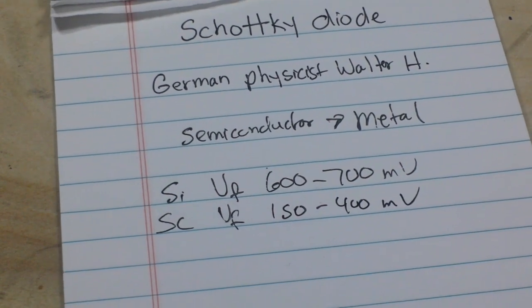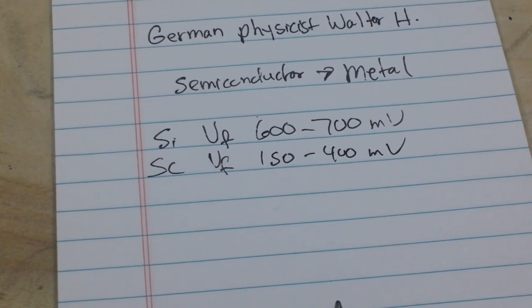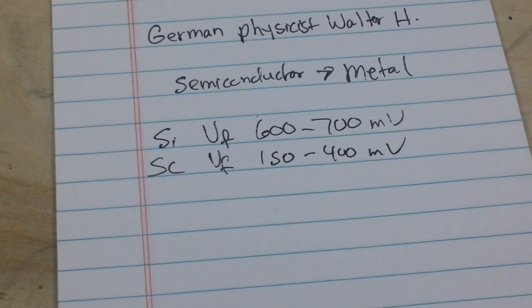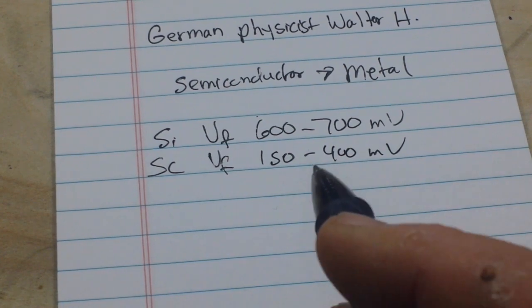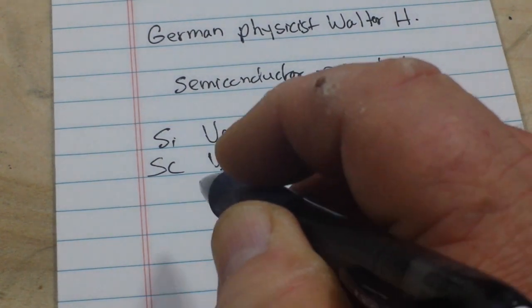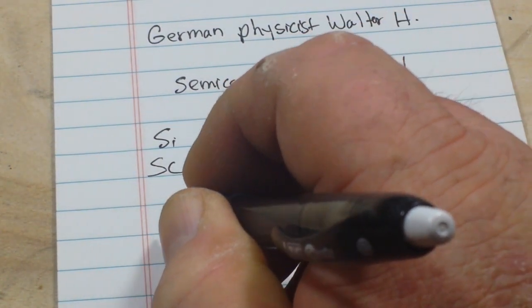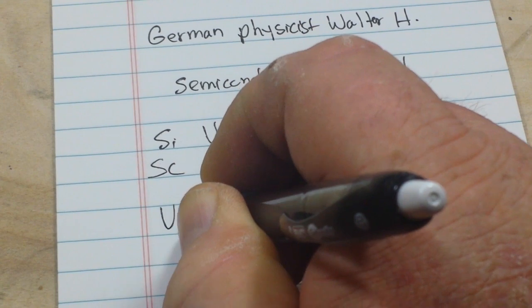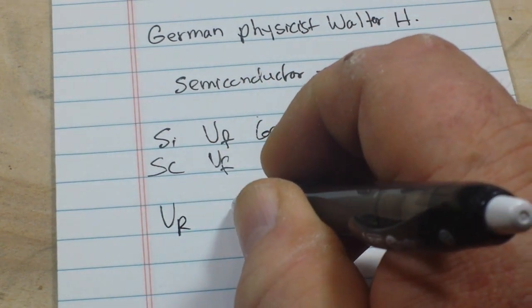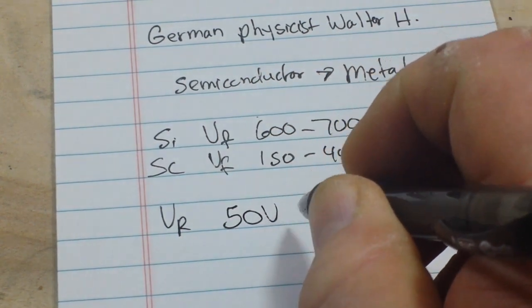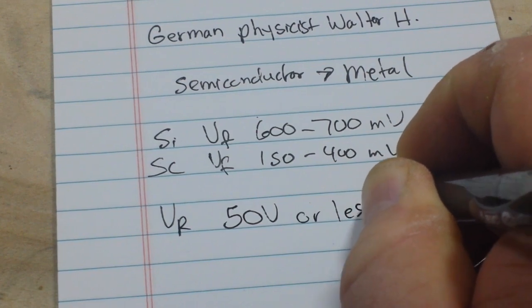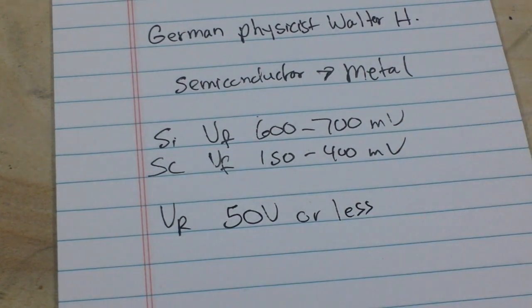Now that seems great, and you're going to say, well why don't we just use them all the time? Well there's reasons and we'll get to that. One of the main limitations is our reverse voltage, VR, for a Schottky diode is generally 50 volts or less. And that causes a problem.